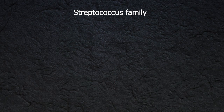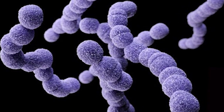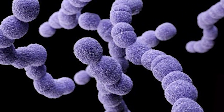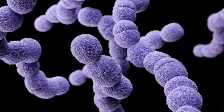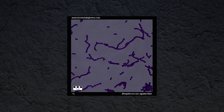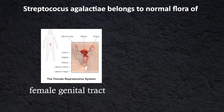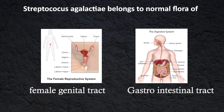The Streptococcus family is usually classified depending either on Lancefield grouping or hemolysis pattern. The Streptococcus species I am going to discuss today is beta-hemolytic and belongs to group B. It is called Streptococcus agalactiae. They are gram-positive spherical cells that occur in chains. Streptococcus agalactiae belongs to the normal flora of the female genital tract and gastrointestinal tract.